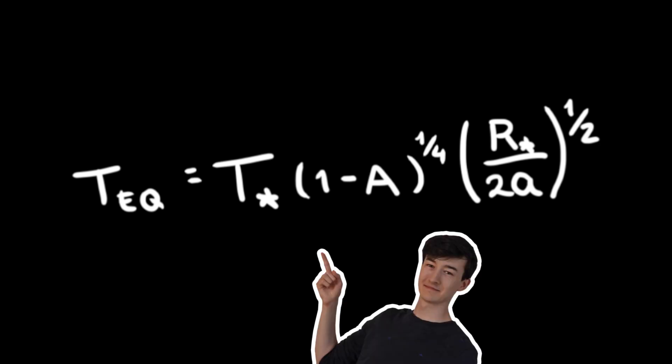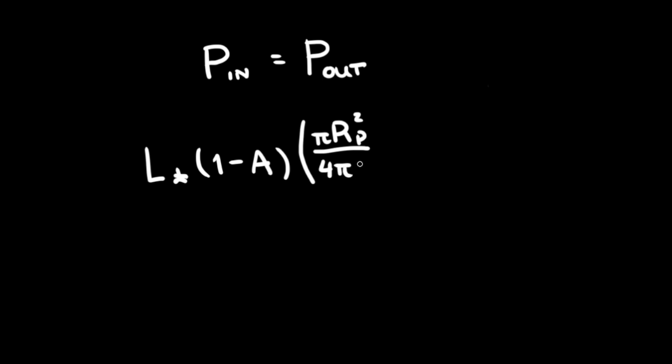Don't worry, it's not going to be as complicated as last time. If you have a planet in thermal equilibrium, that means that the energy absorbed by the planet is the same as the amount of energy being emitted. It has found a balance. In this case, the energy going into the planet comes from the star, and the energy leaving the planet is lost thermally through this expression.